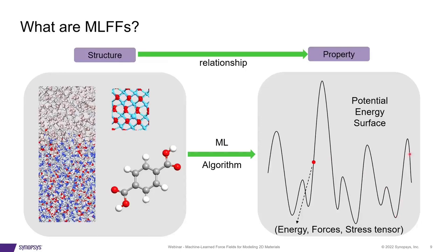The main difference between classical force fields and machine-learning force fields is this: we don't provide any interaction potential functional forms to the machine-learning force field. It learns them by itself by following the density functional theory data that we provide.